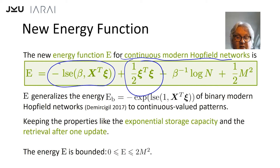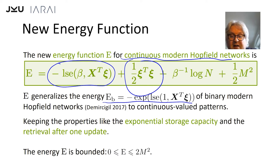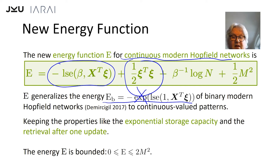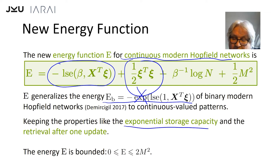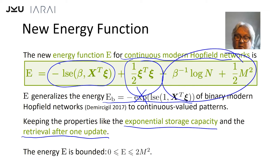With the log-sum-exp we can now define the new energy function for continuous modern Hopfield networks. We have the LSE plus a quadratic term in ξ. The LSE is already known from the binary Hopfield network of Demircigil — we can write the energy function as the exponential of the LSE, we just remove the exponential, and we add the quadratic term. Because of the LSE the properties of the binary modern Hopfield networks are kept: exponential storage capacity and retrieval after one update.